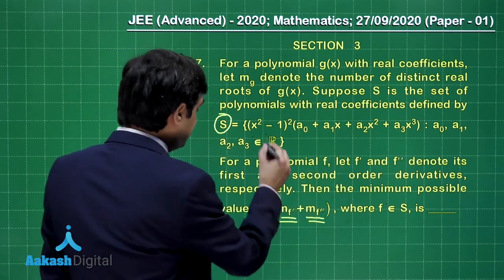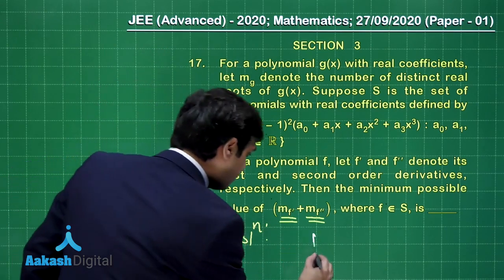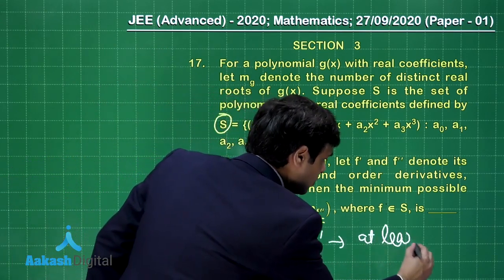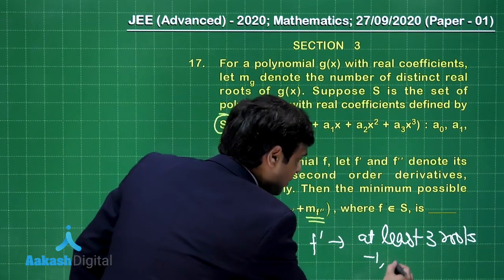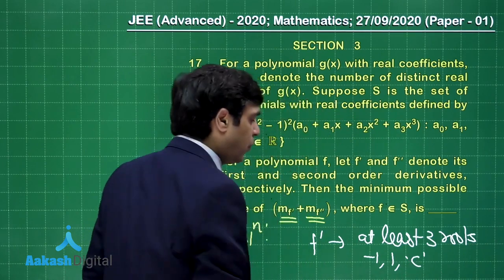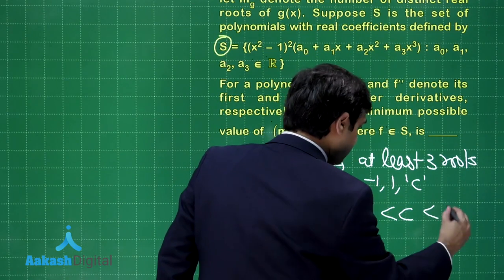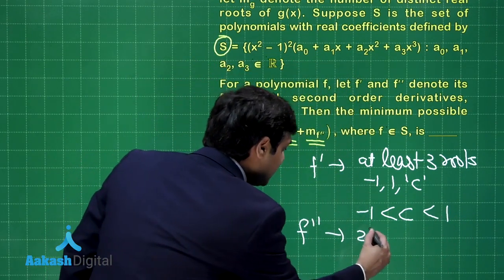All right. So totally what we are observing here that f dash has at least three roots: minus 1, 1 and say C. What is C? C is something between minus 1 and 1.